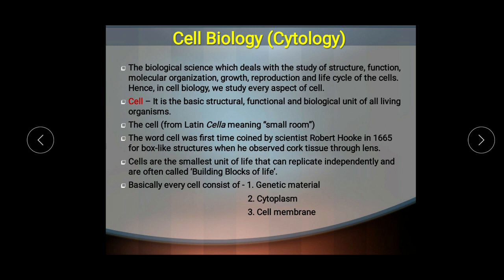Every cell, whether prokaryotic or eukaryotic, consists of three basic parts: the genetic material, which passes information from one generation to the next for the development of the organism; the cytoplasm, which is a liquid matrix; and the cell membrane, which is the outermost living membrane of the cell. These three are the basic parts of each and every cell.